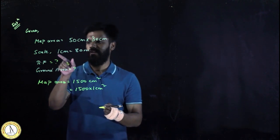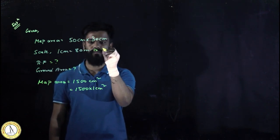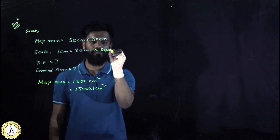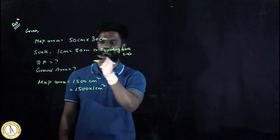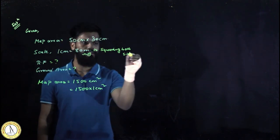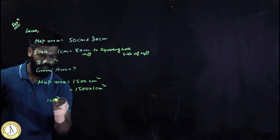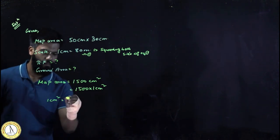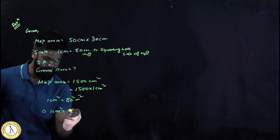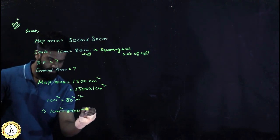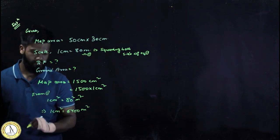Now the scale is 1 centimeter equal to 80 meters. I can write this in another form by squaring both sides. If I square both sides of equation 1, I will get 1 centimeter squared is equivalent to 80 squared meter squared. So 1 centimeter squared equals 6400 meters squared. This is the conversion of this equation.